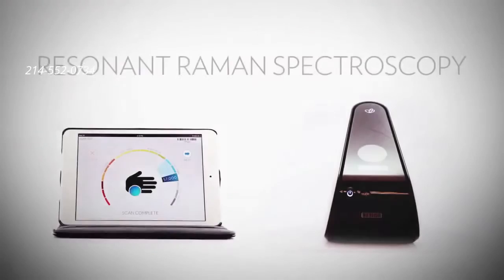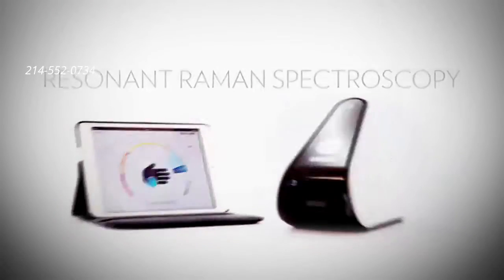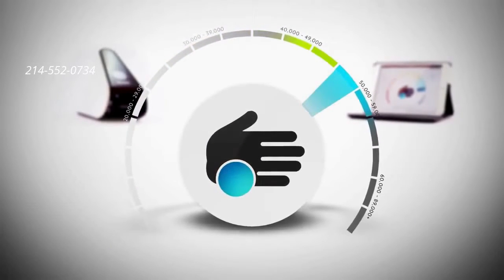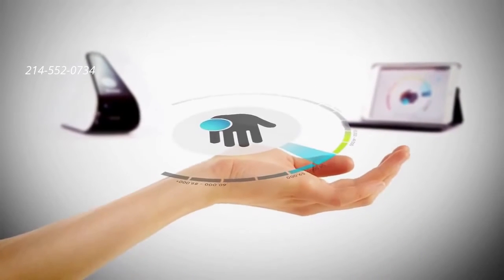The exclusive BioPhotonic S3 scanner functions on the principle of scattered light called resonant Raman spectroscopy. The S3 scanner is the result of years of research and experience with the science of antioxidant detection.